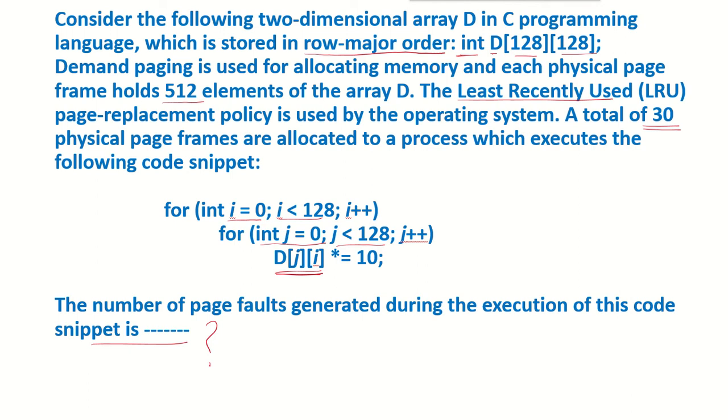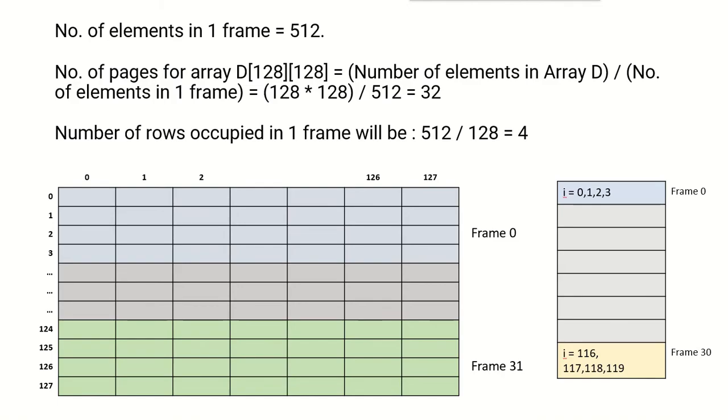Let's say that the number of elements which can be stored in one frame is given as 512. That means one page frame of the RAM is able to hold 512 elements.